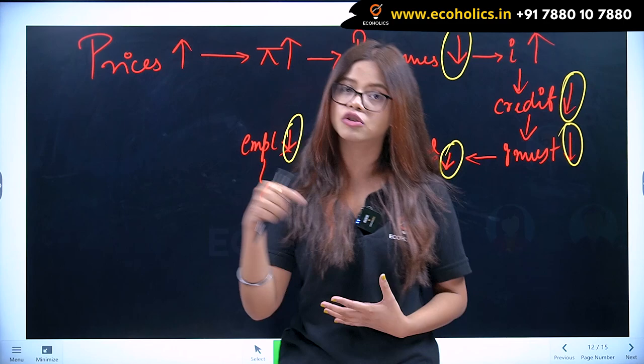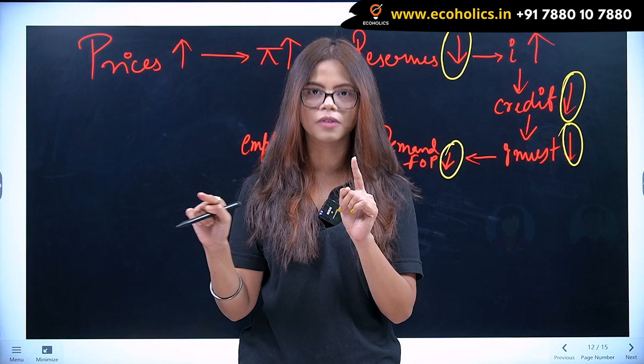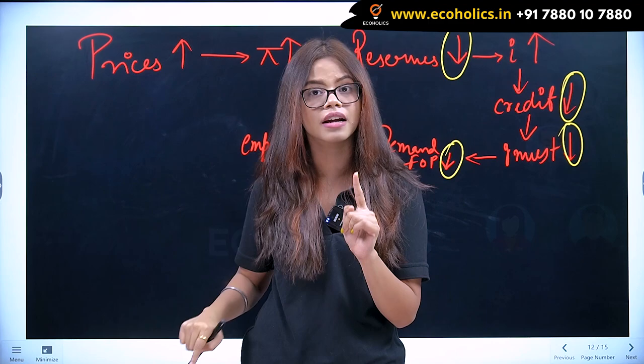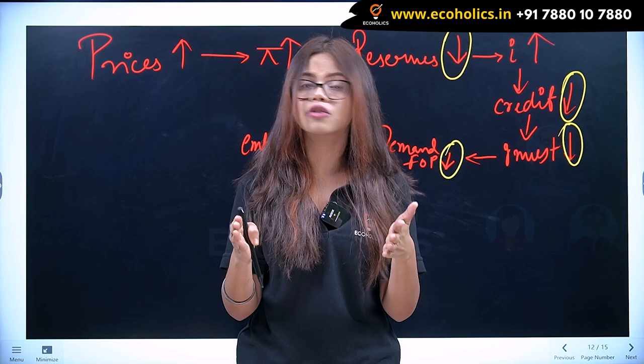I hope the theory is clear to all of you. You just need to remember the chain: reserves were bigger, bank gave loans, investment was bigger, production was bigger. Just memorize the chain and understand — you are perfectly good to go.